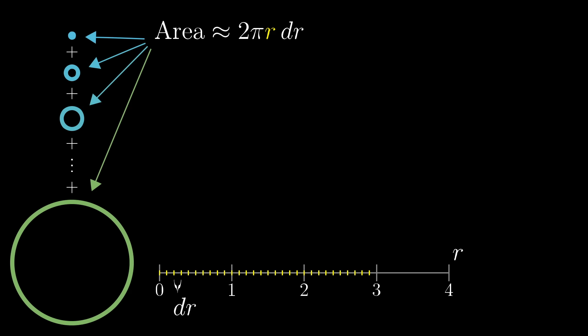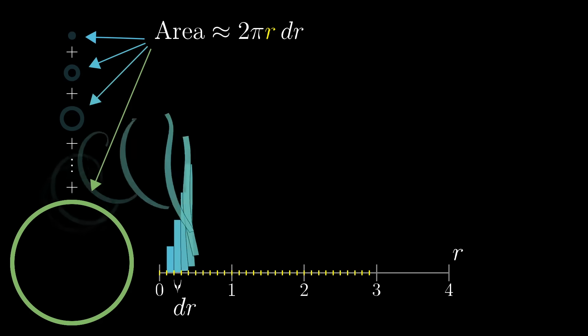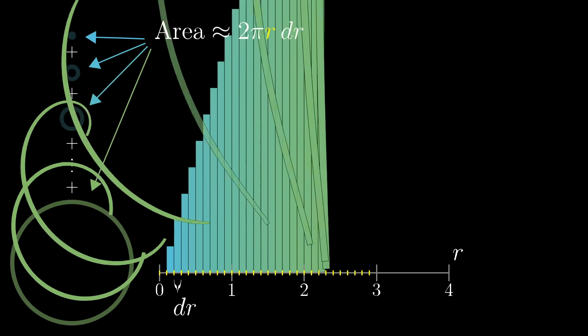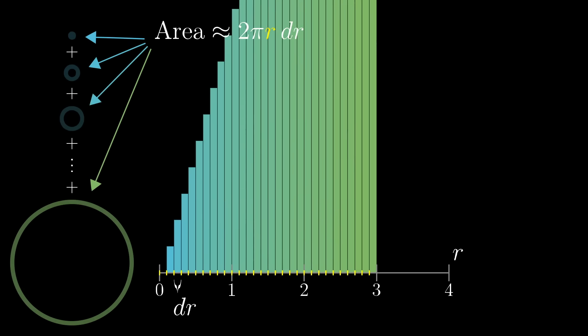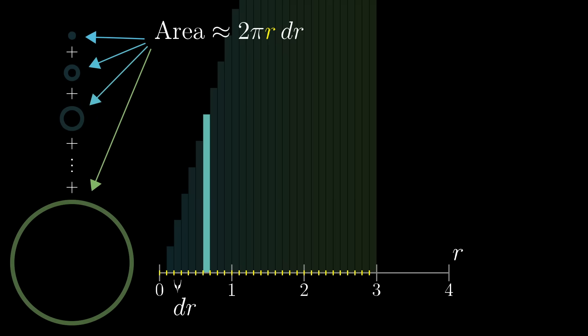And notice that the spacing between the values here corresponds to the thickness dr of each ring, the difference in radius from one ring to the next. In fact, a nice way to think about the rectangles approximating each ring's area is to fit them all upright side by side along this axis. Each one has a thickness dr, which is why they fit so snugly right there together, and the height of any one of these rectangles sitting above some specific value of r, like 0.6, is exactly 2 pi times that value. That's the circumference of the corresponding ring that this rectangle approximates.